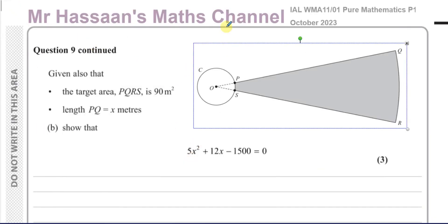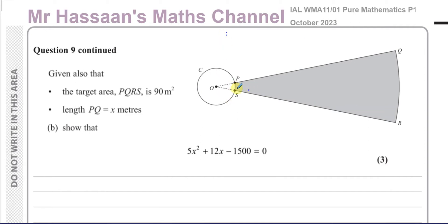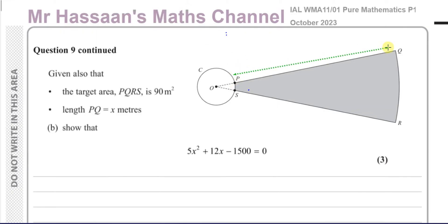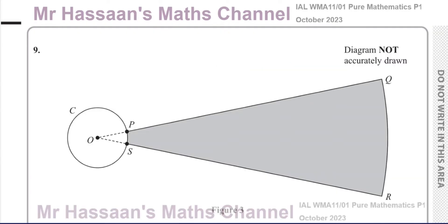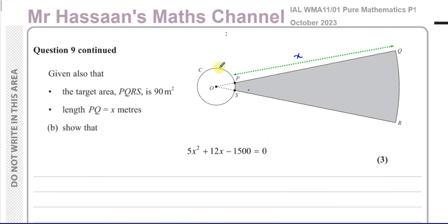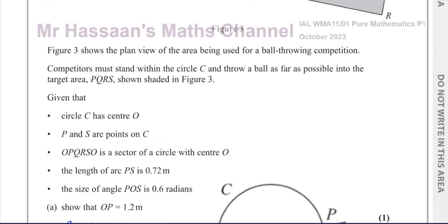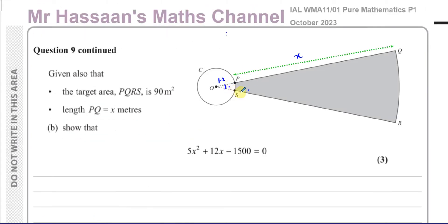Part B says: given that the target area PQRS — which is the area of the sector without the part inside the circle — is 90 metres squared, and the length PQ is X. The length from P to Q is X, and OP equals 1.2 metres. The angle was 0.6 radians.